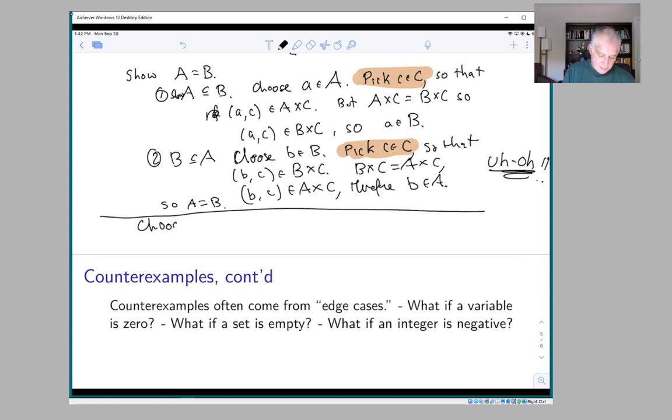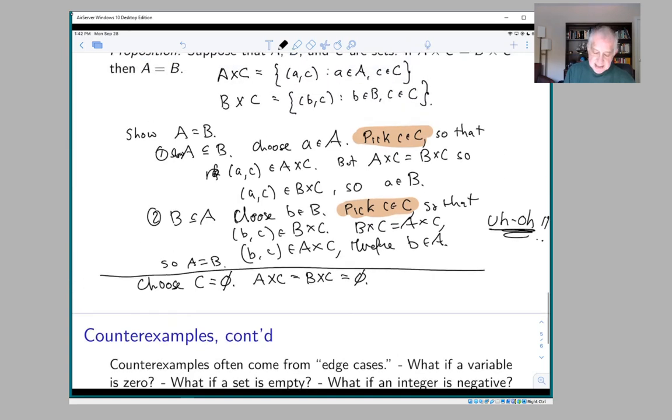If we choose C to be the empty set, then A × C is equal to B × C. They're both equal to the empty set, because when you try to make these sets of ordered pairs where you choose a in A and c in C, there is no c in C, so you can't make a pair.